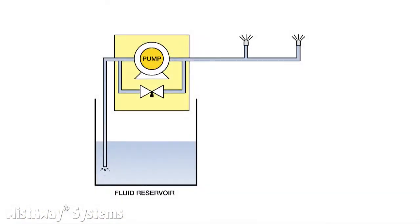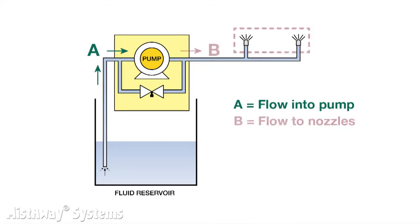Now let's talk about flow and pressure through the pump. First, let's discuss flow. Look at this simple schematic. A represents the flow of fluid into the pump from the fluid reservoir. B represents the flow of fluid out through the nozzles. A has to equal B after the pump has primed itself and is operating in steady state.